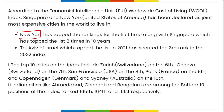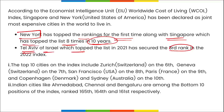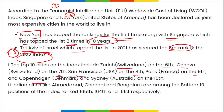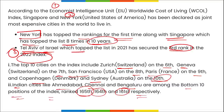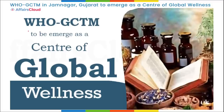New York has topped the ranking for the first time, tied with Singapore, which has topped the list eight times in ten years. Tel Aviv secured the third rank. In the top 10: Zurich (Switzerland) is 6th, Geneva 7th, San Francisco 8th, Paris 9th, and Copenhagen and Sydney are 10th. Indian cities — Ahmedabad, Chennai, and Bangalore — are among the bottom 10, ranked 165th, 164th, and 161st respectively.